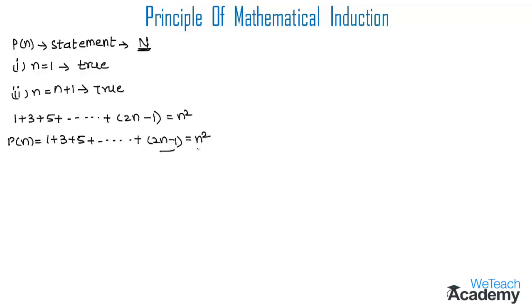For the base case, substitute n = 1. We get 2(1) - 1 = 1², which gives 2 - 1 = 1, and 1 = 1. Since LHS = RHS, we can say that P(1) is true.